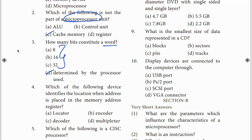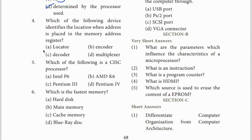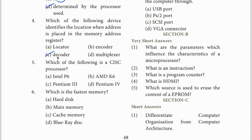Fourth question: what identifies the location? Identify the location - decode. When you say 'decode,' that identifies the location. Fifth question: CISC. This is CISC. You can choose option C.